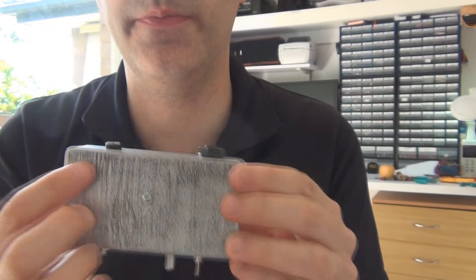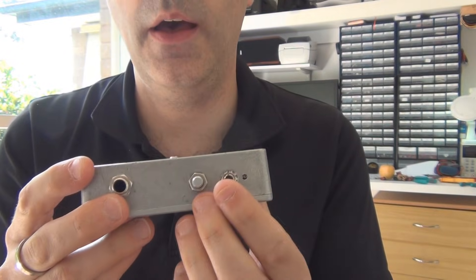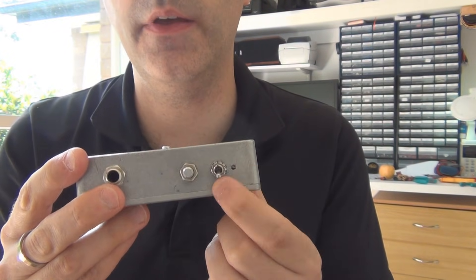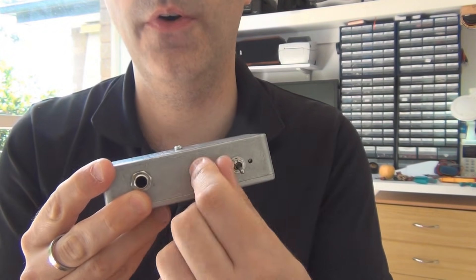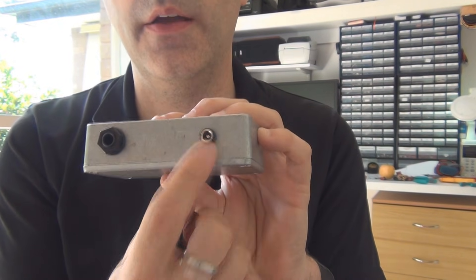So this is my build. I just etched this pattern on the top with a Dremel. You can see the LED is here, there's the on-off switch, volume control, guitar input, speaker output and DC input.